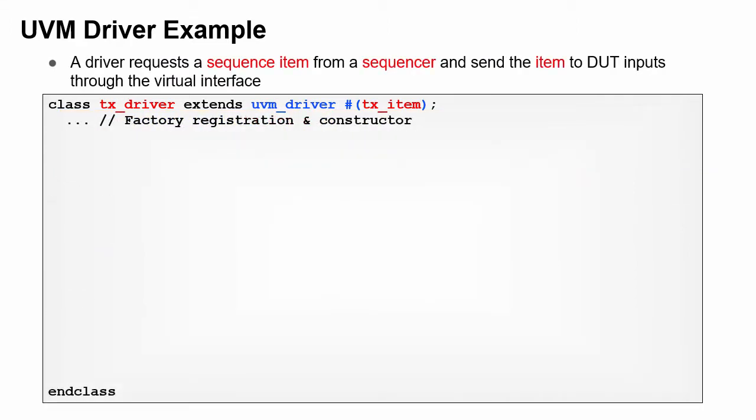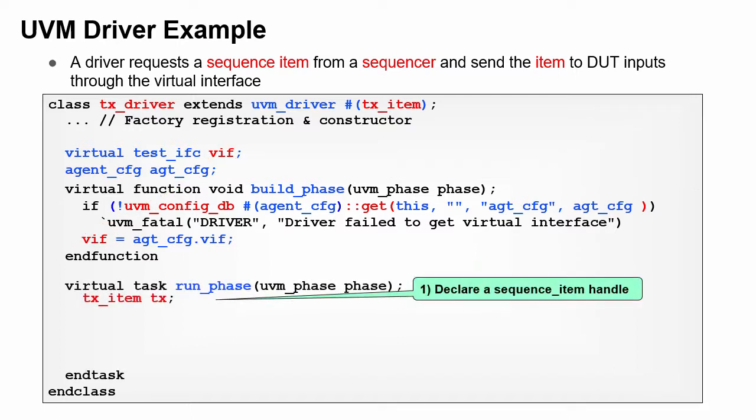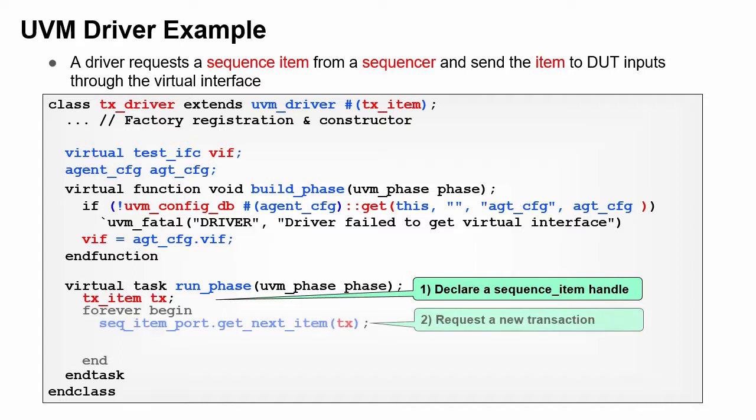Here is more code for a driver, which pulls transactions from the sequence and sends them to the DUT. The driver needs a handle, VIF, to the interface so it can send the transaction. You will learn in a later lesson how the handle is stored in the database and retrieved here. The real work of a driver is performed in the run phase. First, declare a handle to a transaction. Second, the driver gets the next transaction from the sequence by calling GetNextItem. This is the TLM port that you saw declared in the UVM driver base class.